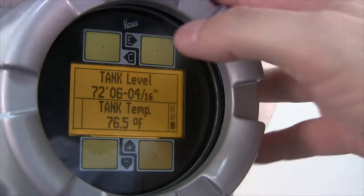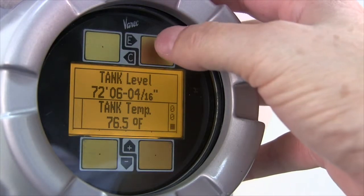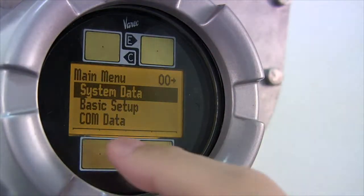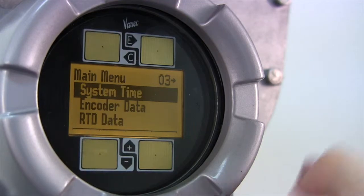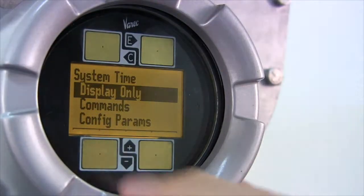To begin, open the main menu by pressing the E button. Use the minus button to scroll to system time. Open the system time menu by pressing E.